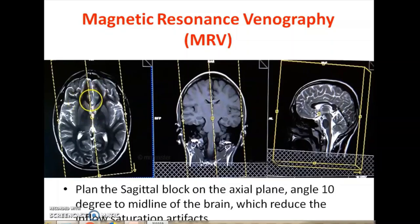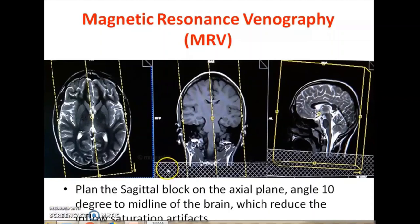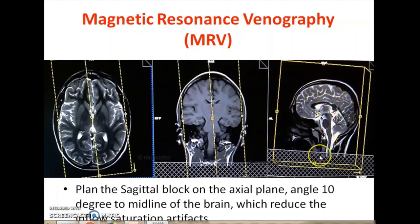The sagittal plane is a little oblique — a 10-degree oblique to the midline of the brain — which reduces the inflow saturation artifacts from the vessels running parallel. Normally there are transverse sinuses. A very important thing is that the saturation band has to be placed below the region of interest to avoid signals from arterial flow. So in angiogram, the saturation band is placed above the region of interest; in venogram, it has to be placed below the planning area.